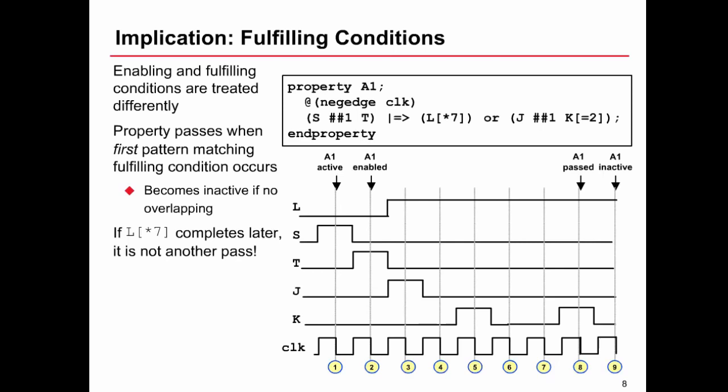And following j, on cycle five, we have one occurrence of k and on eight, we have the second occurrence of k. So at that cycle eight, our assertion will pass. If you remember back to our discussion on non consecutive repetition, that equals two was true from the second occurrence all the way up until the third occurrence of k. However, that's irrelevant for us in regard of a pass because we have already seen the shortest pattern that will match that behavior on here.